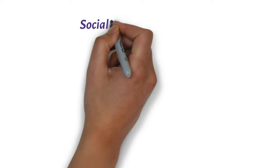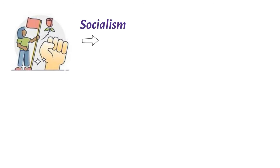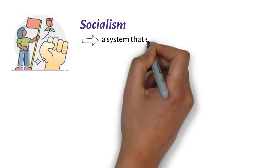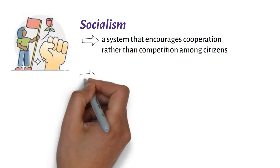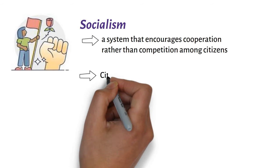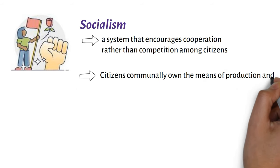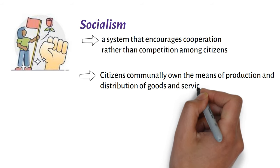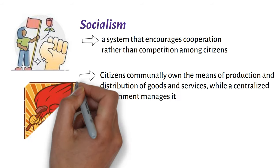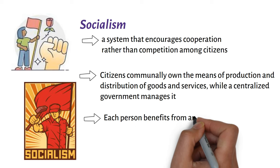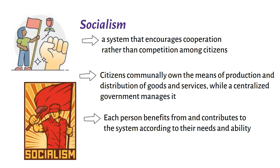On Socialism. Socialism is a system that encourages cooperation rather than competition among citizens. Citizens communally own the means of production and distribution of goods and services, while a centralised government manages it. Each person benefits from and contributes to the system according to their needs and ability.